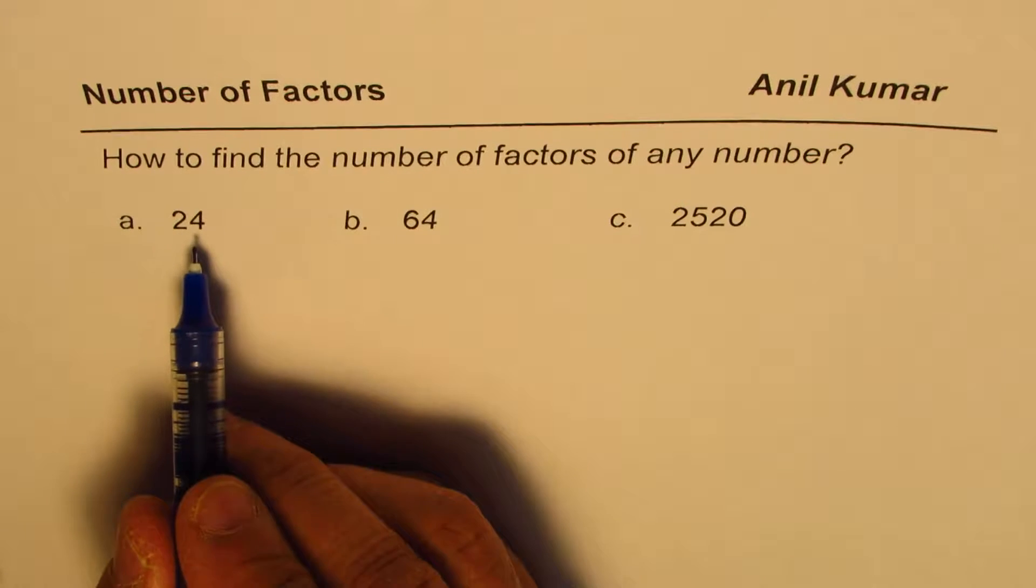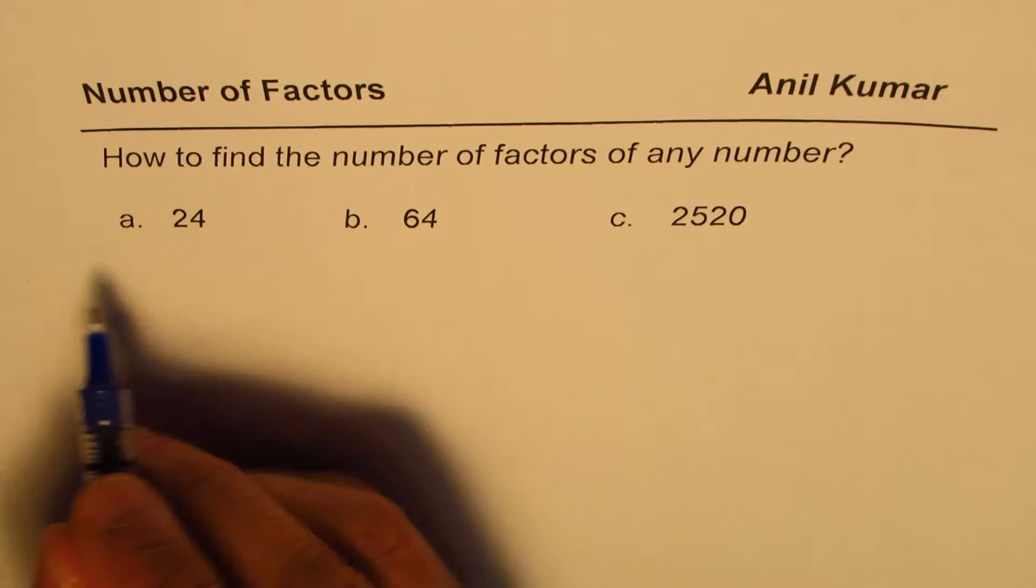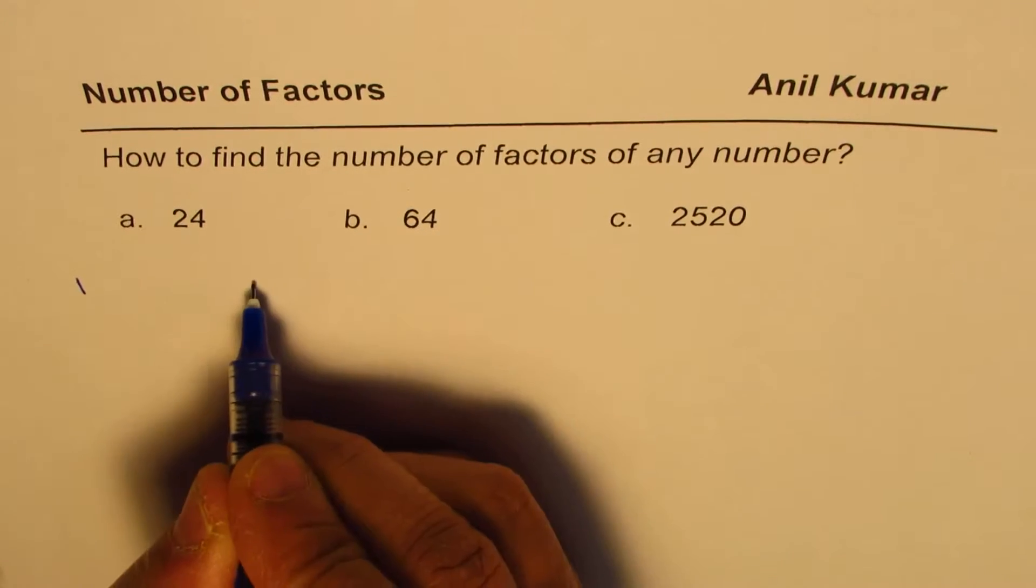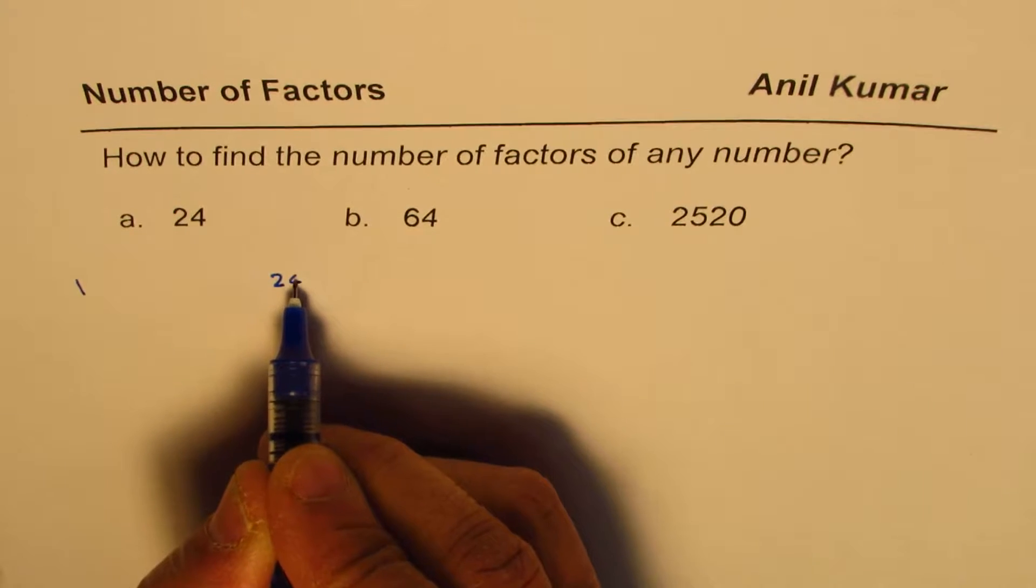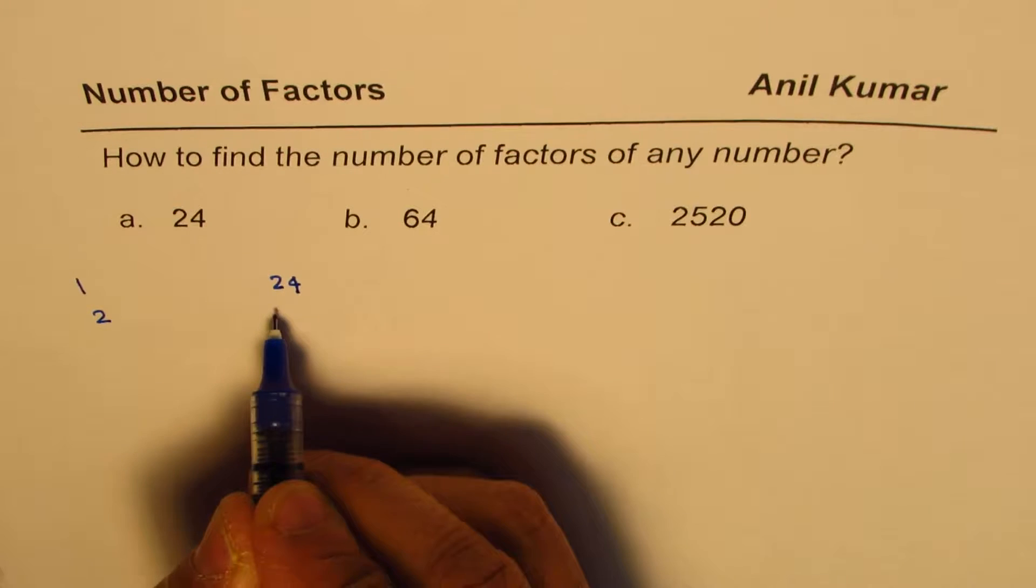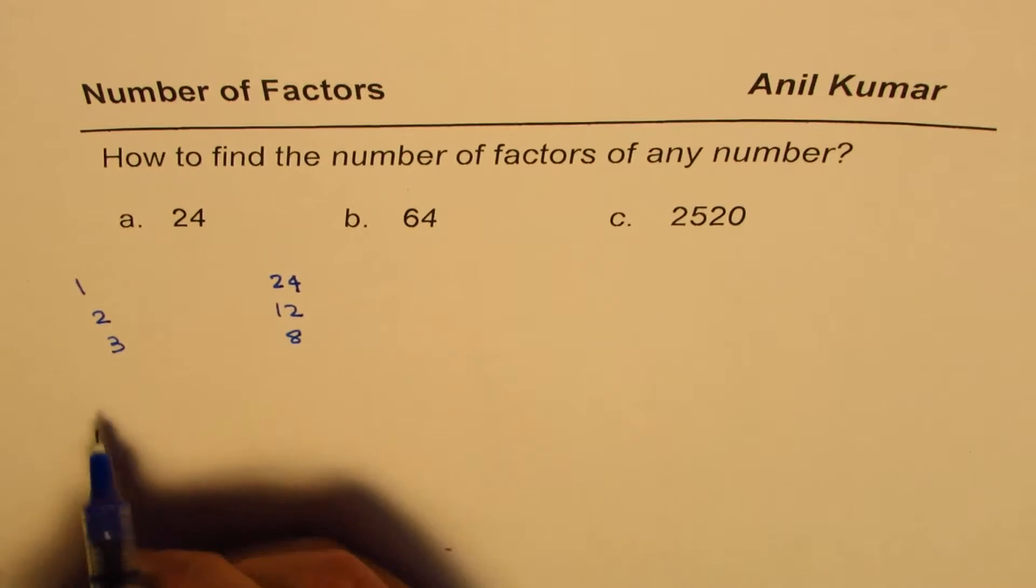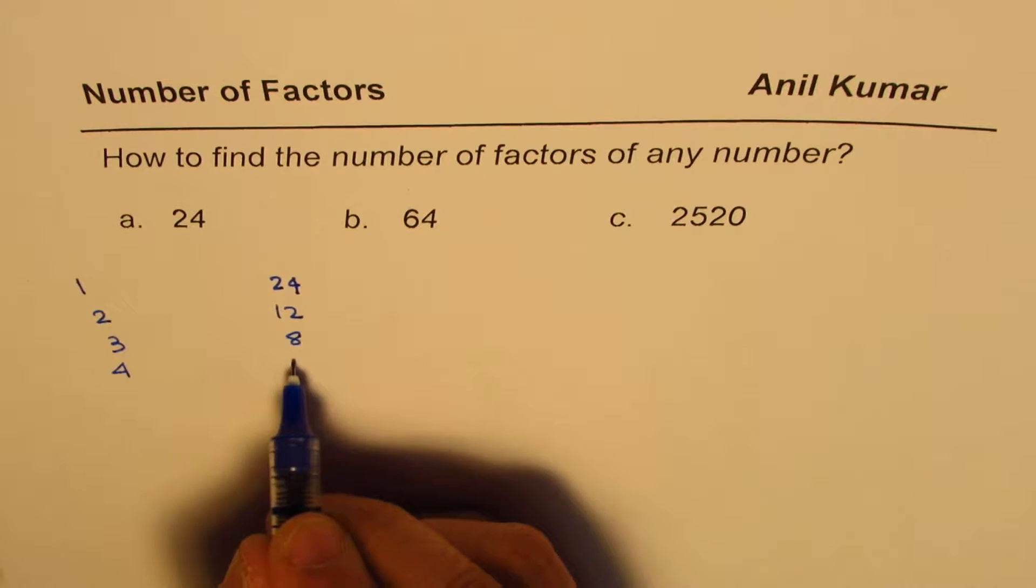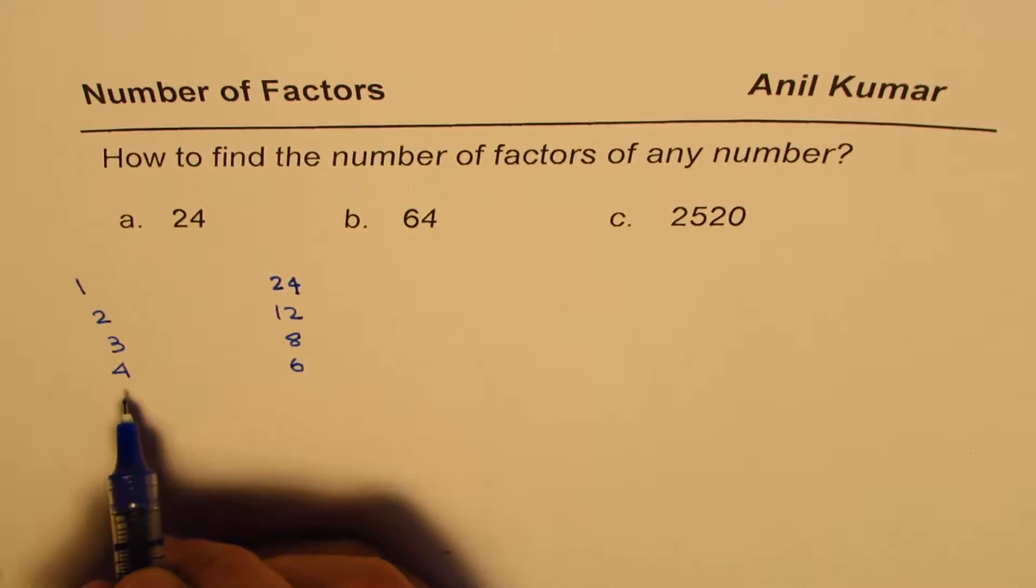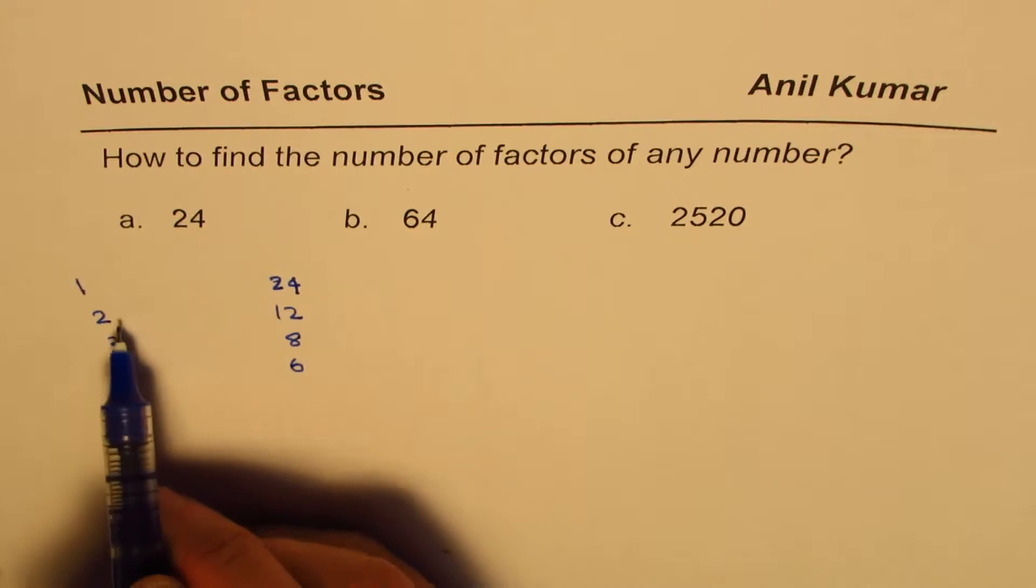So as we learn few concepts, to find factors we could do a rainbow kind of structure. 24 we know is like 1 times 24 is 24, correct? 2 times 12 is 24, perfect. 3 times 8 is 24, 4 times 6 is 24. So these numbers repeat. So we have 1, 2, 3,